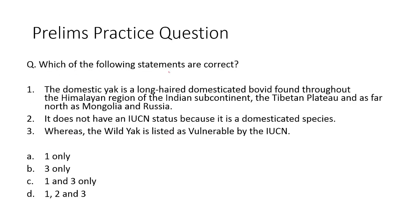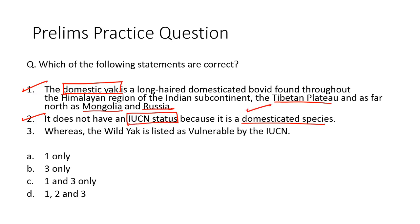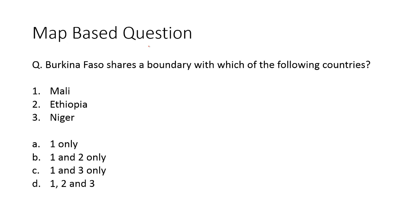Now let's take up the third question: which of the following statements are correct? The domestic yak is a long-haired domesticated bovid found throughout the Himalayan region of the Indian subcontinent, also found in the Tibetan plateau and as far north as Mongolia and Russia — this is a correct statement. It does not have an IUCN status because it is a domesticated species — this is again correct, as domesticated species are not listed on the IUCN red list. Whereas the wild yak is listed as vulnerable by the IUCN — this is also correct. So option D is the right answer.